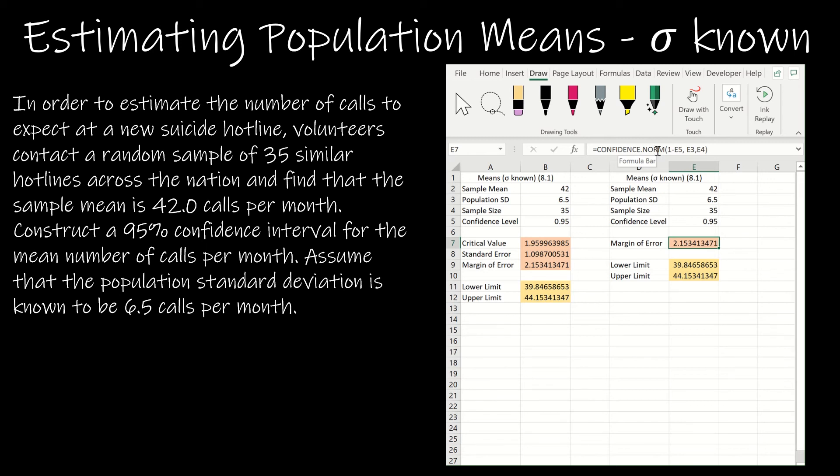This is using confidence.norm. And for confidence.norm, we're going to take one minus the confidence level. So essentially, it's saying put in alpha. So if you remember, alpha was one minus C and C is 0.95. So you're putting in alpha and then the standard deviation, which is 6.5. And then the sample size 35, so that they can calculate the standard error for you is essentially what they do. So they found the margin of error. I still have to do this part where I subtract and add. But again, that gives me everything that I need for my confidence interval.